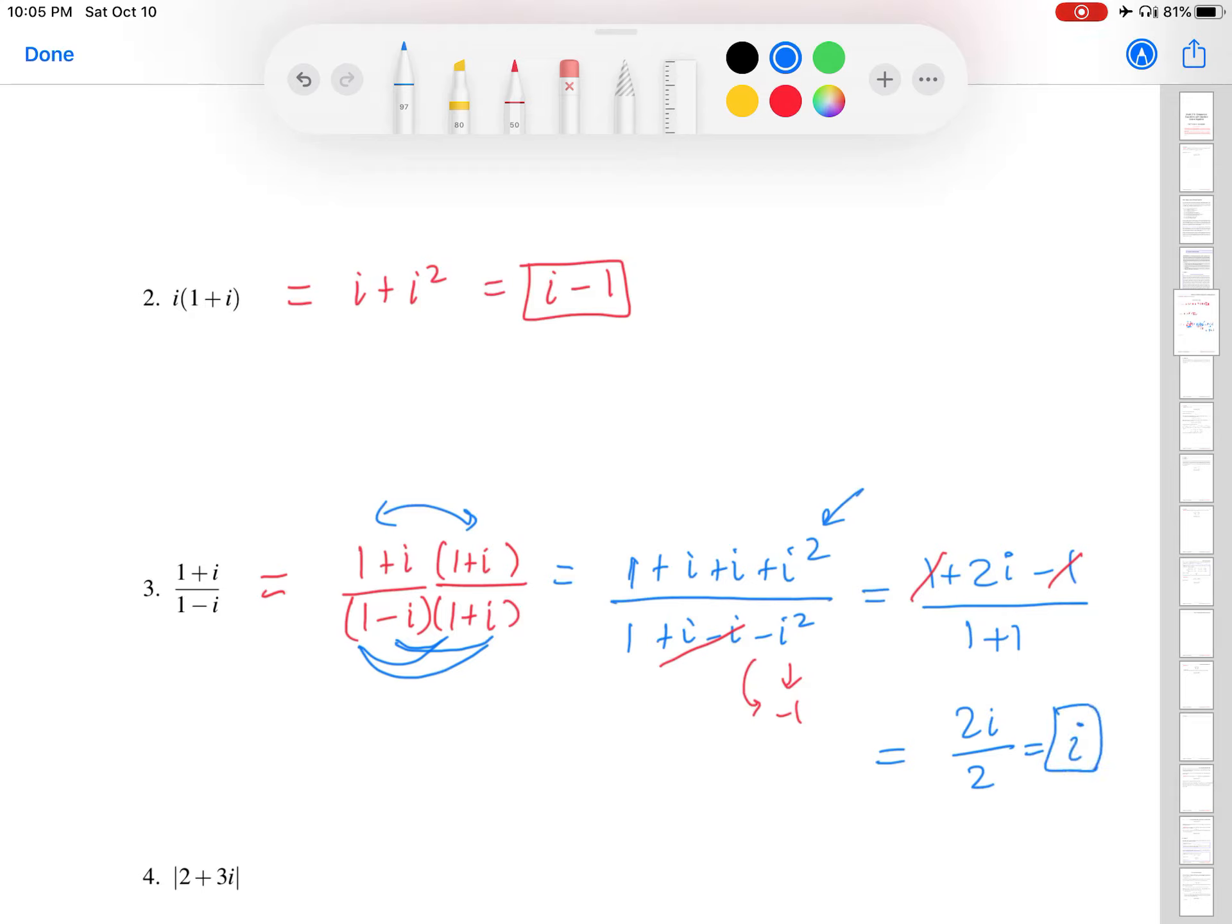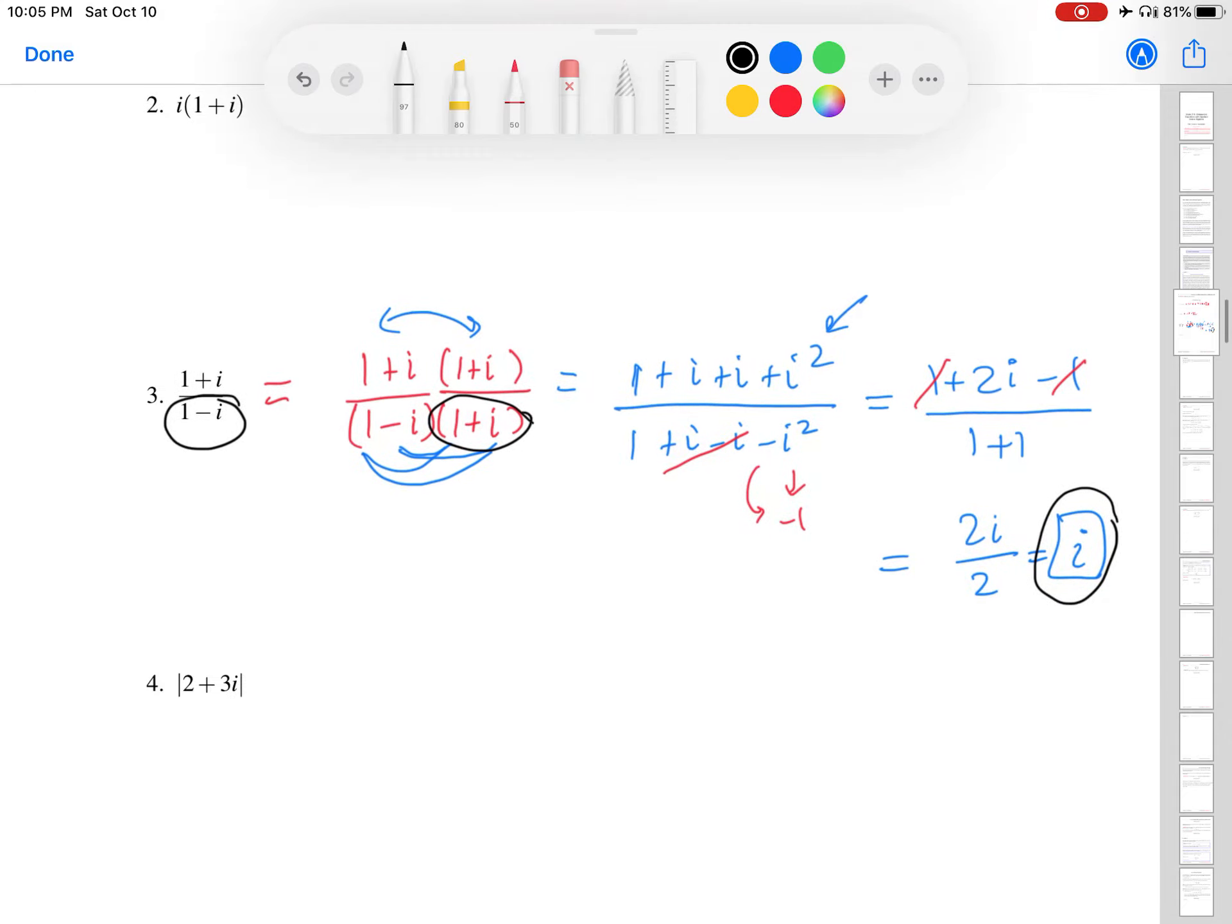So you can see one of the reasons why we like to rationalize, in a sense. Multiply the fraction by the complex conjugate, because it oftentimes yields a complex number that's a lot simpler than what we were looking at to begin with.